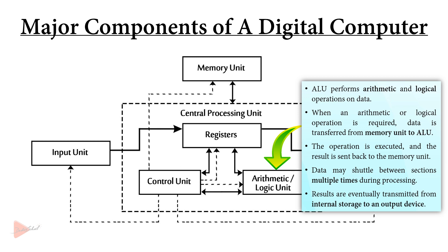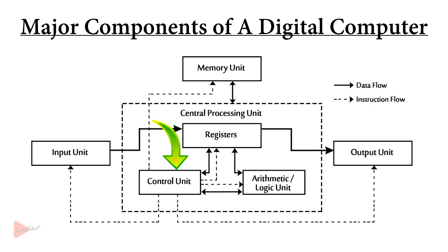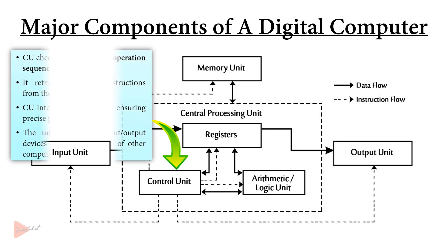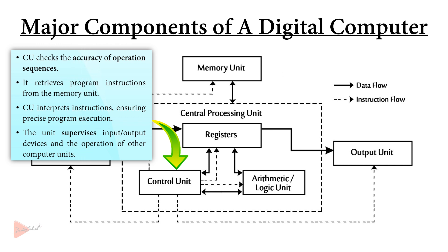During the processing cycle, data may need to shuttle back and forth between these sections multiple times. Ultimately, the results are conveyed from the internal storage to an output device. Next, the control unit or CU — this unit checks the accuracy of operation sequences. It fetches program instructions from the memory unit, interprets their meaning, and ensures accurate program execution. It additionally manages input/output devices and oversees the comprehensive operation of the computer's other units.